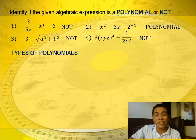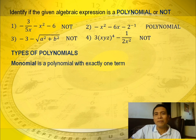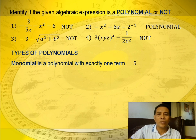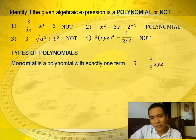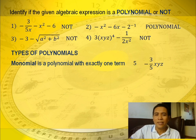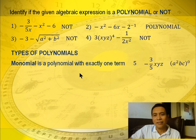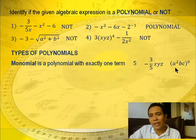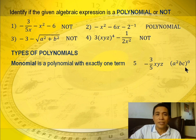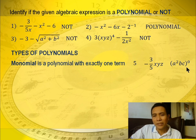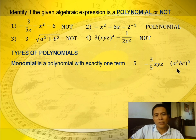Let's go to the types of polynomials. First, we have a monomial — composed of exactly one term. Example: 5, a constant, is a monomial. Also, negative 3 times xyz is one term, so it is a monomial. Another example: a squared bc raised to 0. Any number raised to 0 equals 1, which is the multiplicative identity, so this simplifies to a squared bc — one term, a monomial.